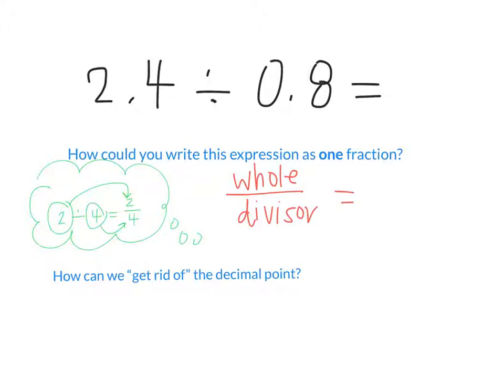So what's the whole in this case? 2.4. And what's the divisor? 0.8. So this right here, this is how you would write that math expression as a fraction. Do you agree? Now do you guys see that there's decimal points here? There's a decimal point here and there's a decimal point here.